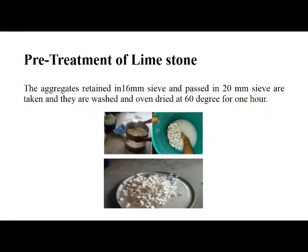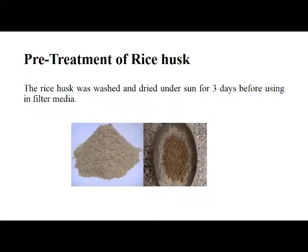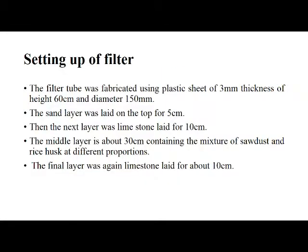Pre-treatment of limestone: The aggregates retained in a 16 mm sieve and passed through a 20 mm sieve are taken, washed, and oven-dried at 60 degrees per hour. Pre-treatment of sawdust: The sawdust is sieved in a 2 mm sieve and washed using water until the color of the washed water is normal, then dried under sun for three days before use as filter media. Pre-treatment of rice husk: The rice husk was washed and dried under sun for three days before use in filter media.